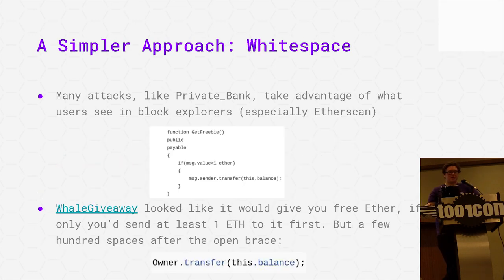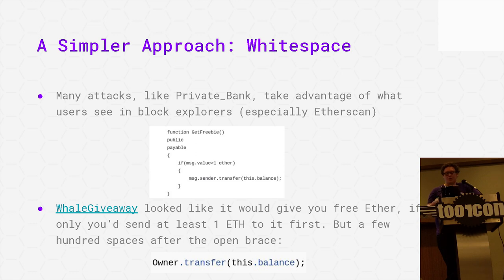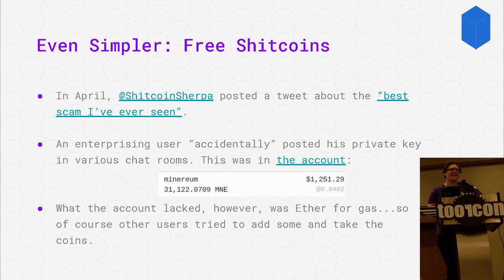A much simpler approach that some people have taken, which also takes advantage of Etherscan, is uploading source code with hidden code pushed off to the side by adding a bunch of whitespace. This person added an owner.transfer of the entire contract balance prior to sending funds to the person who started the transaction. So the first transfer succeeds — the attacker gets the money — and the second one fails, losing the victim's funds.